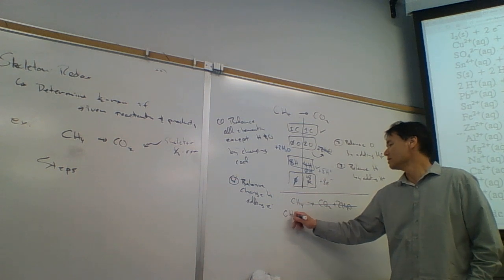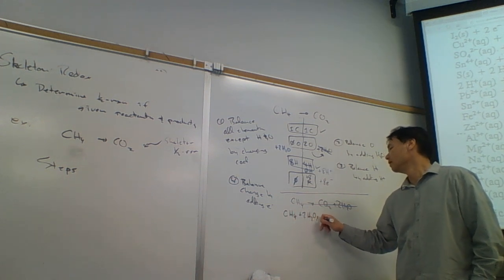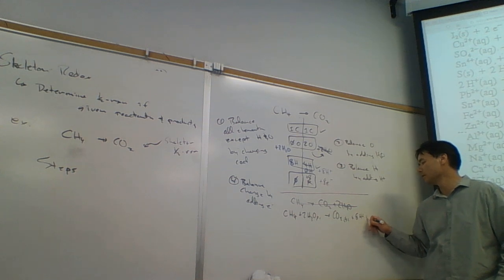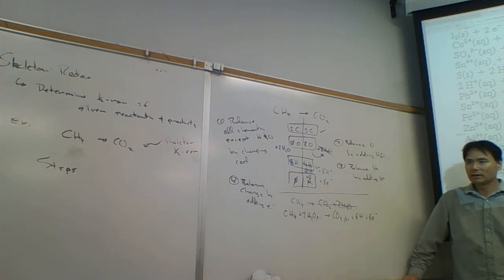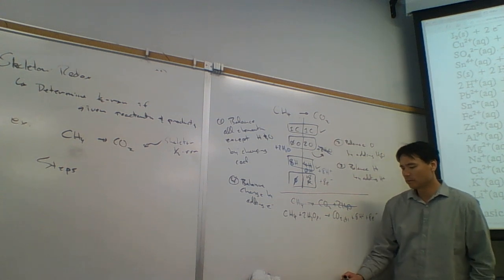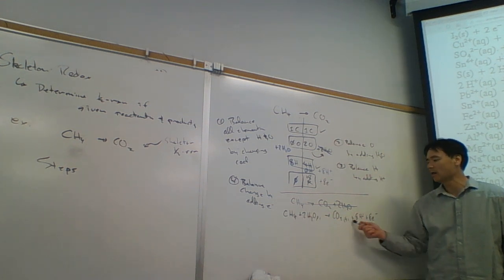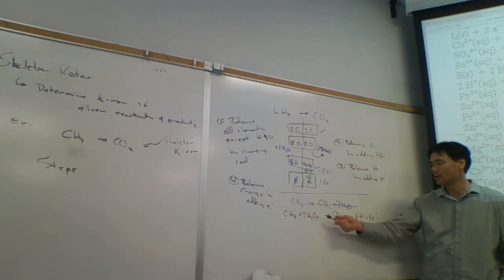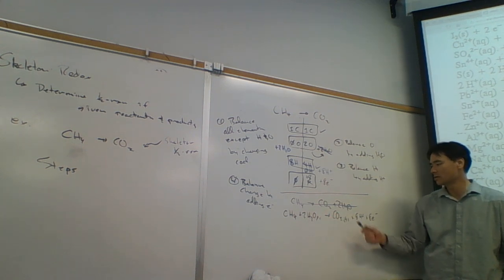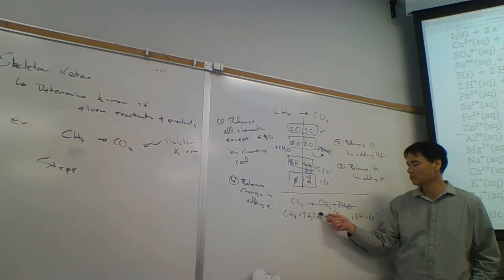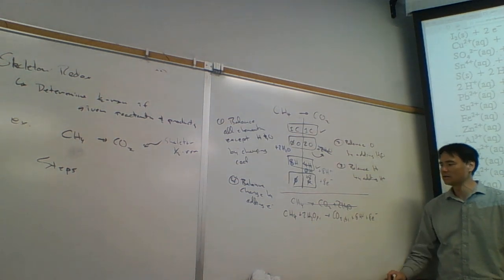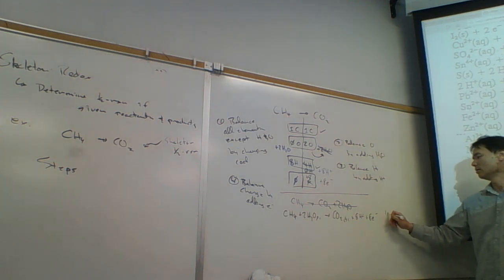The balanced half-reaction is: CH4 + 2H2O(l) → CO2(g) + 8H+ + 8e−. Let's verify: 1 carbon on each side ✓; 4 + 4 = 8 hydrogens on left, 8 hydrogens on right ✓; 2 oxygens on each side ✓. For charge: left side is zero, right side is +8 − 8 = 0. Net zero charge on both sides. This is a balanced half-reaction.